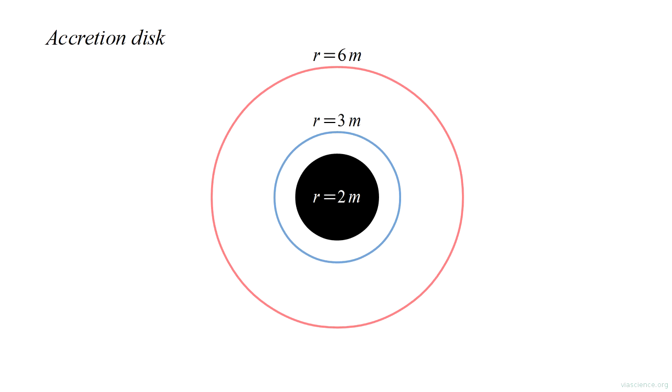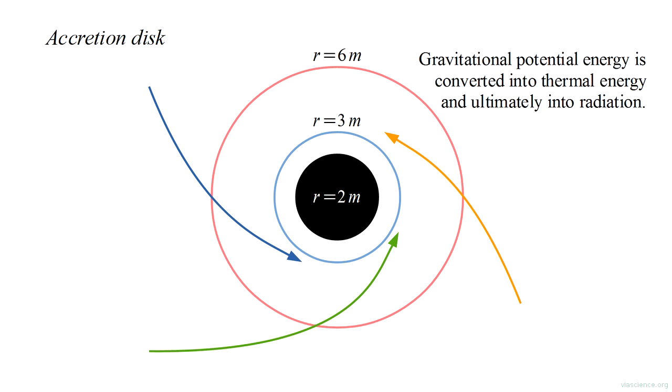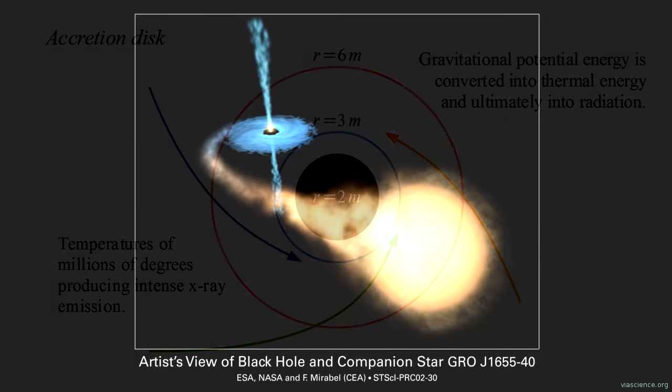Other evidence for black holes can come from an accretion disk. If material falls into a black hole, it can accelerate to near the speed of light. These high speeds and violent collisions produce tremendous heat, which in turn generates radiation. Temperatures of millions of degrees are possible, which can produce intense X-ray emissions.